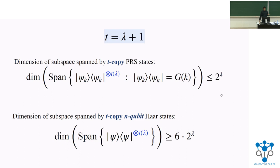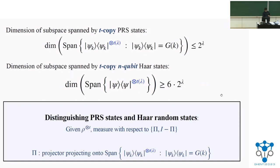Once you create this gap it gives a natural distinguisher. The distinguisher takes T copies of a state and projects onto the subspace spanned by all T-copy PRS states. If the input is a PRS state, the projection always succeeds. If the input is a Haar state, the projection succeeds with probability at most one-sixth. This shows that for output length larger than logarithmic, you need computational assumptions to construct PRS.